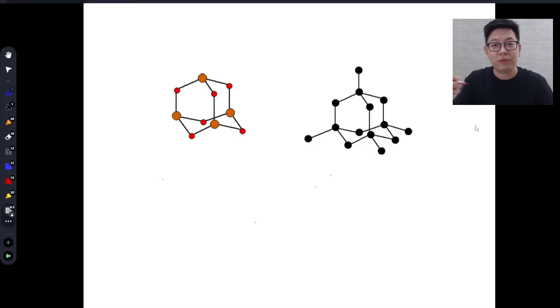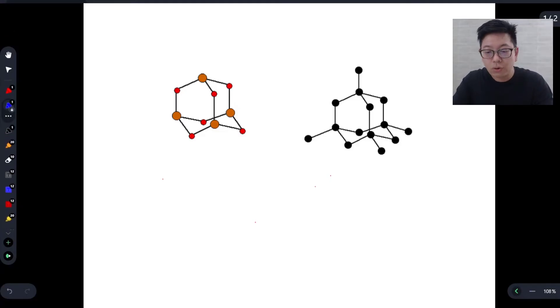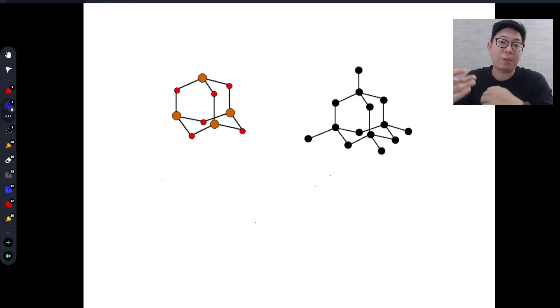Alright, so here you're given two different structures and some of you might say that you know, teacher, I know I memorized that one of them is diamond and the other one is like a simple molecular structure, but they actually look similar. So how do I tell them apart?